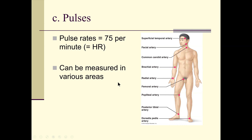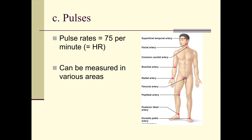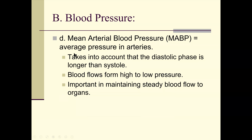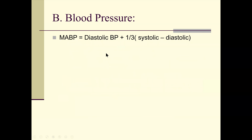Average pulse rate is 75 beats per minute. The SA node has an inherent rate of 100 beats per minute, but the parasympathetic vagus interaction keeps it around 70–80 beats per minute. Mean arterial pressure is diastolic plus one-third of the difference between systolic and diastolic — it accounts for the diastolic phase being longer than systolic.